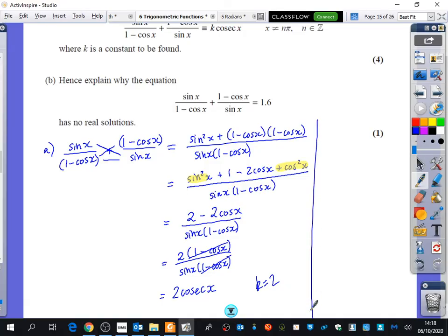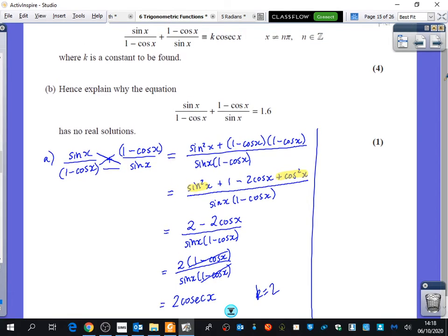So then part B of the question is nice and easy because it's only one mark. It says, hence, explain why this equation being equal to 1.6 has no real solutions. Well, they love to do these questions where part A of the question is going to be helping you to do part B. And the word that gives that away is? Hence. This word hence is telling me use A to do B. Well, A just tells me that this whole thing is the same as this whole thing. So instead of this equation, which is exactly the same as this one I've just boxed in blue, instead of saying that that equals 1.6, I'm just going to say that 2 cosec x equals 1.6.